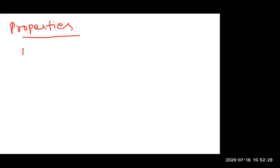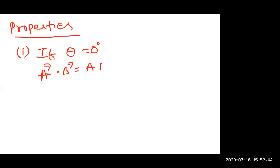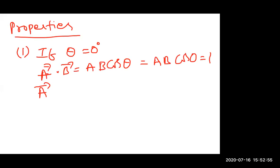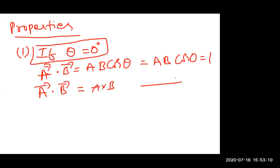Now let us observe some properties. First, if theta is equal to 0 degrees, then a bar dot b bar equals AB cos 0, and cos 0 is 1. So the dot product is simply the product of the magnitudes when the angle between the vectors is 0 degrees, meaning both vectors are in the same direction.